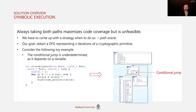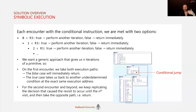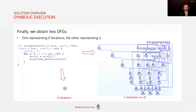We want to obtain a DFG representing N iterations of a cryptographic primitive. For example, a simple stream cipher has an underdetermined conditional branch derived from a function parameter. During each encounter with a conditional instruction we have two choices: perform another iteration or return. Upon the first encounter we take both execution paths — false returns immediately, true leads to another underdetermined condition at the same execution address. For the second encounter and beyond, we replicate the decision that caused the revisit until the end visit, then take the opposite path, i.e., return. This yields two data flow graphs: one representing zero iterations and one representing N iterations.